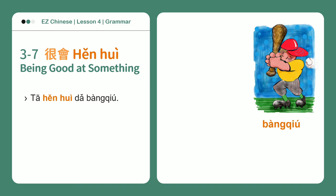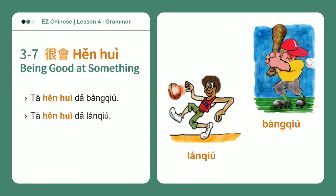很会 — Being good at something. 棒球: 他很会打棒球 — Baseball. He plays baseball really well. 篮球: 他们都很会打篮球 — Basketball. They play basketball very well. 他们都很会打球 — They're both really good at ball games.